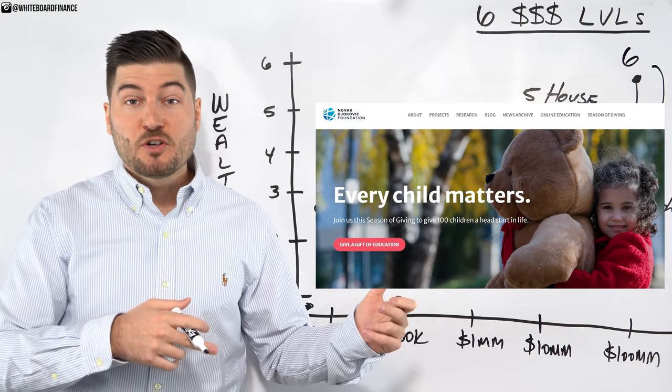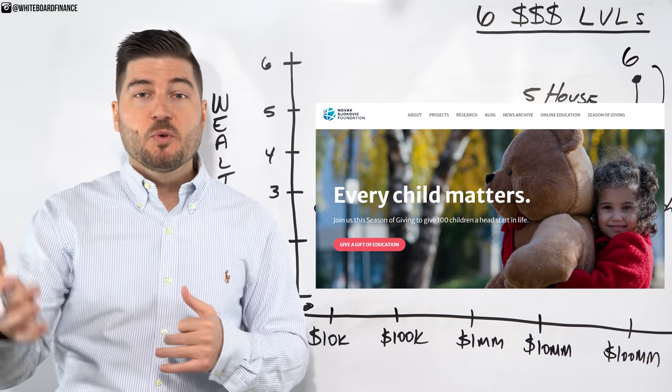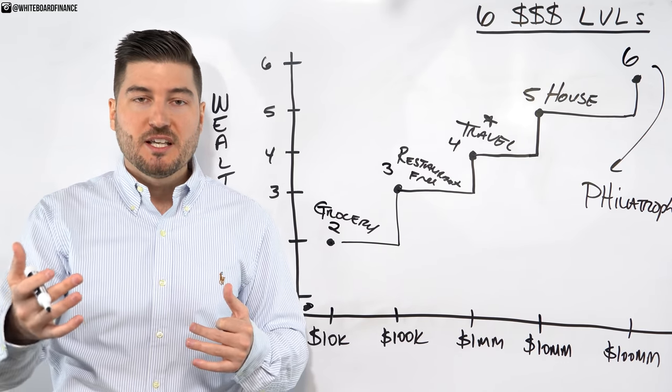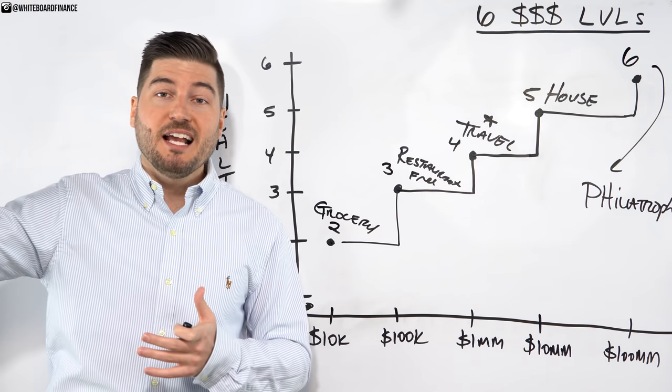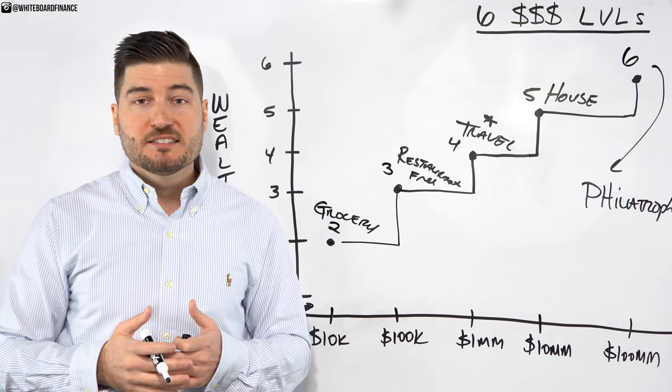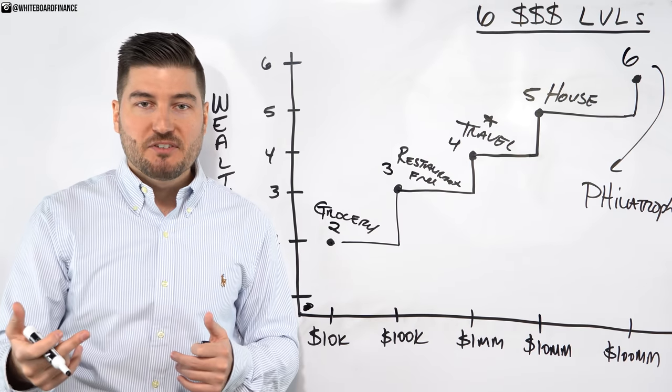When I look at certain athletes or business people, the ones that I respect the most are the ones that give back. Instead of the Novak Djokovic Foundation, which has given away millions of dollars to charity, how cool would it be to have your own foundation or charity? How cool would it be to change your community? Pay for a playground? Open a calisthenics park for people to work out at? Donate laptops to kids in need? This is why building wealth is cool because at the end of the day, you can give it away.